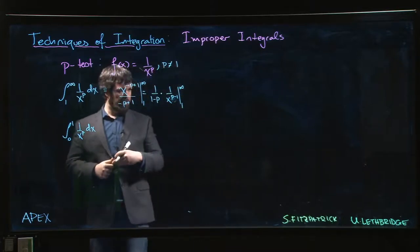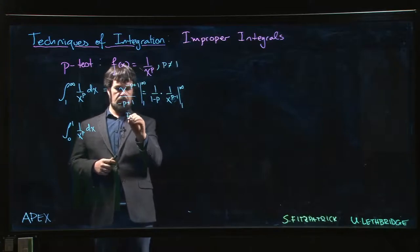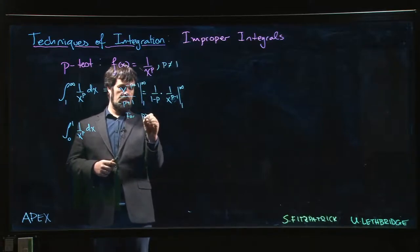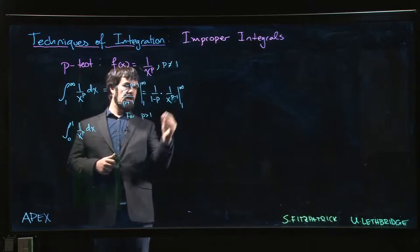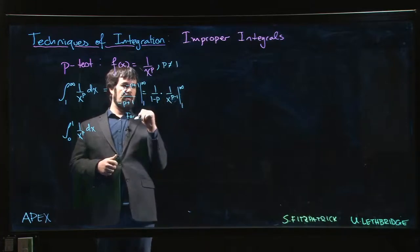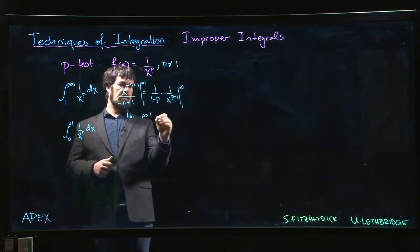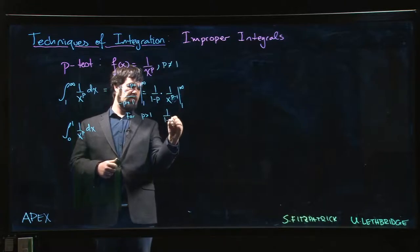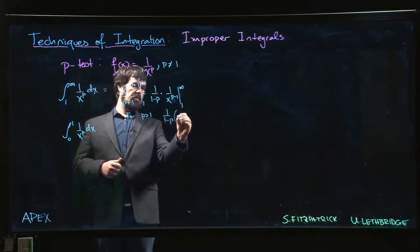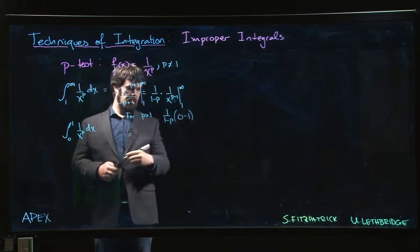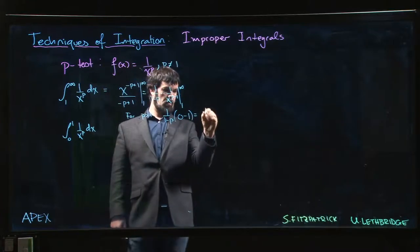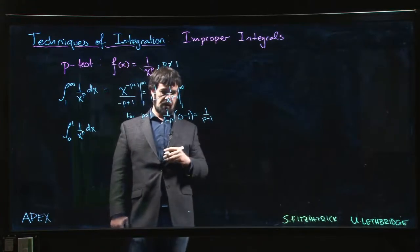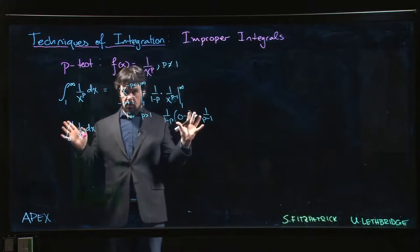If p is bigger than 1, then this is 1 over x to a positive value. And I'm going to get 1 over 1 minus p times 0 minus 1. And so I just get 1 over p minus 1 for my value.